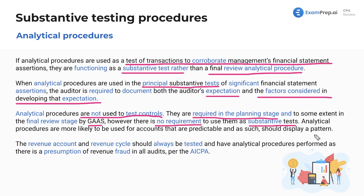The revenue account and revenue cycle should always be tested. Revenue should always have analytical procedures performed, as there is a presumption of revenue fraud in all audits per the AICPA. This is because revenue is the item most likely to be overstated to make financial statements look better — perhaps managers want bonuses based on earnings per share or the appearance of strong financial statements.